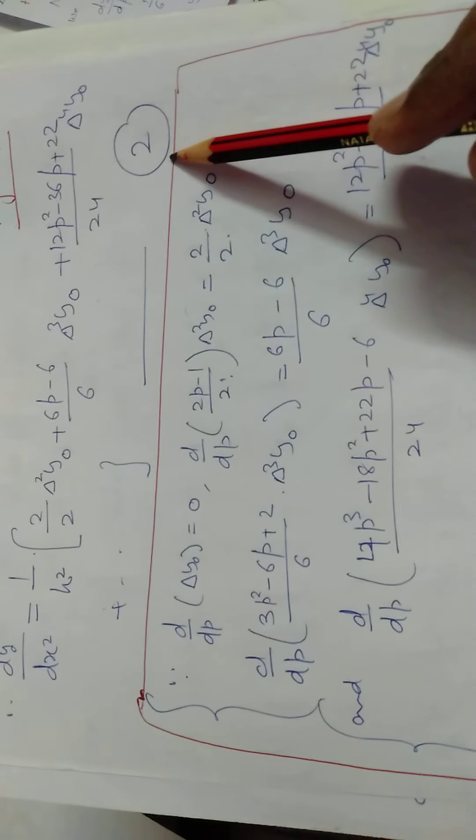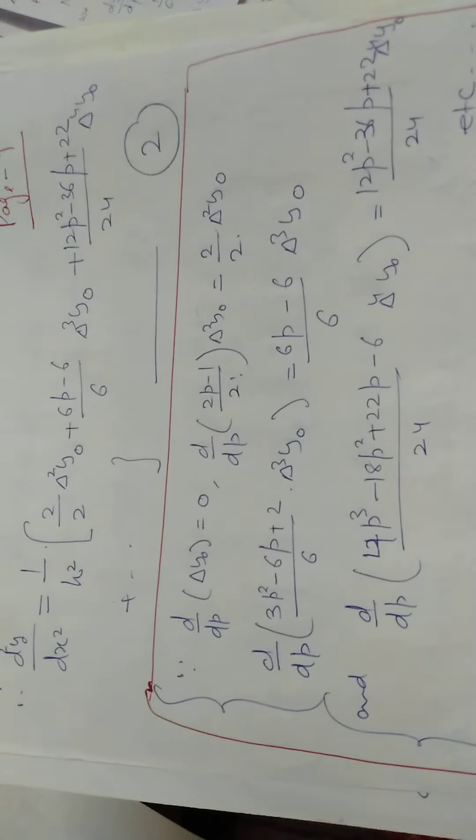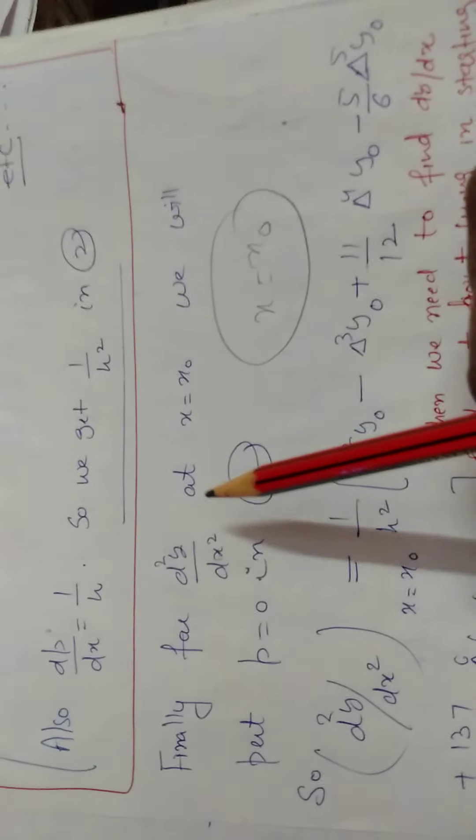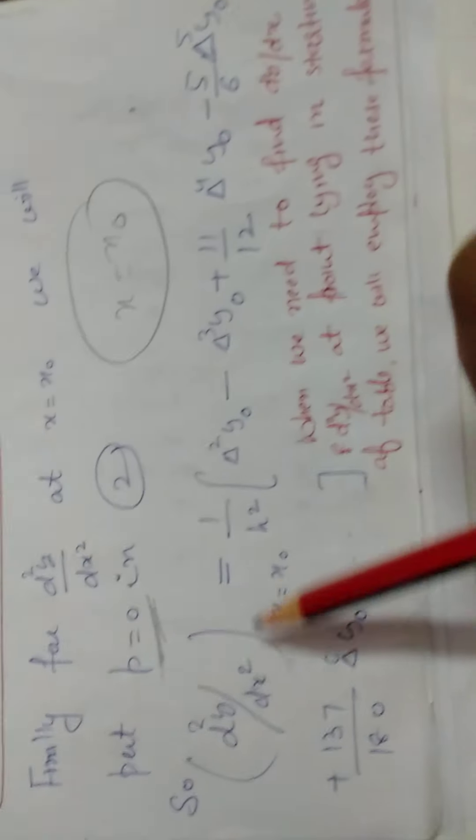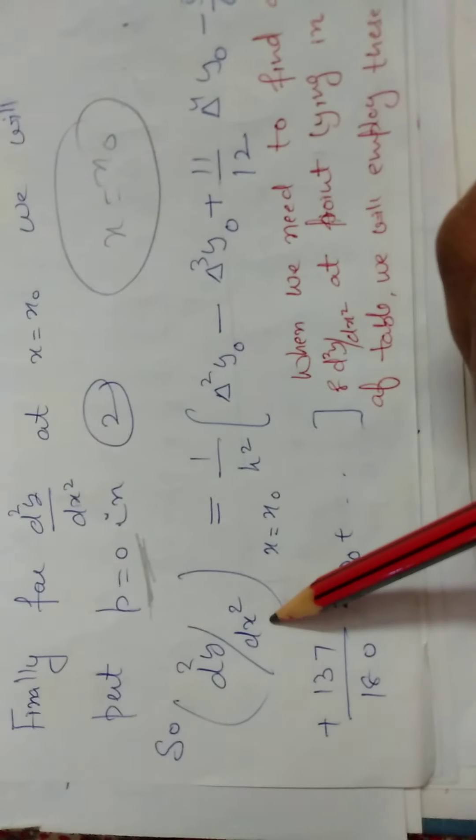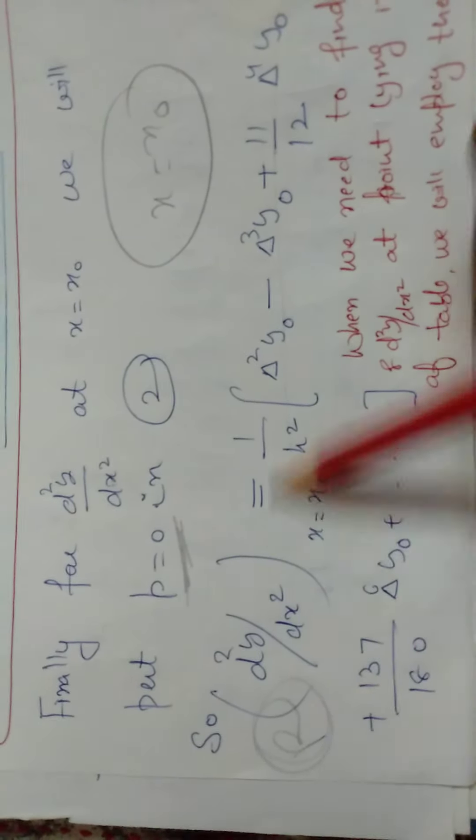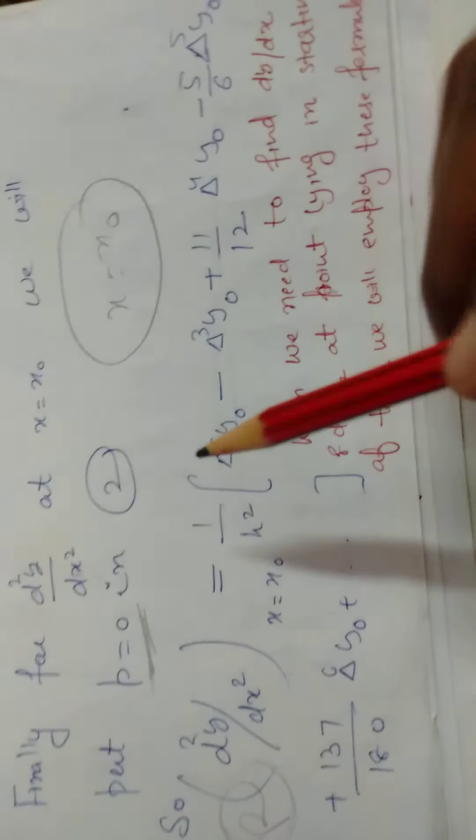We took all these values forward and differentiated. Now the next step - we will put p equals zero. When we put p equal to zero inside this, we get one formula. We have to memorize this formula, whenever we need it.